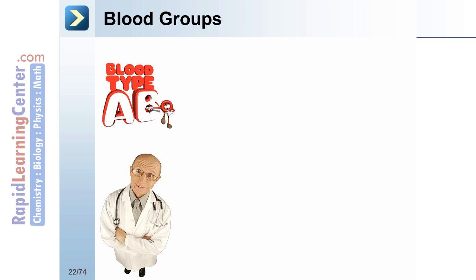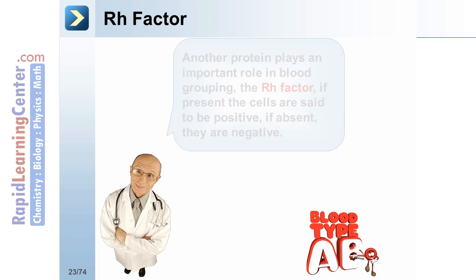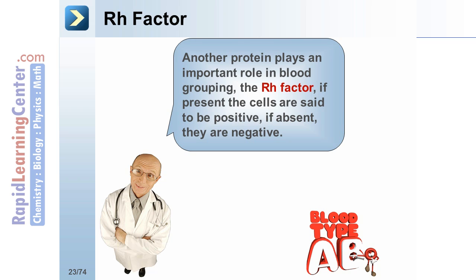Finally, let's take a look at blood groups. The four major blood groups are A, which has the A antigen on the surface of red blood cells and the B antibody in plasma; B, which has the B antigen on the surface of red blood cells and the A antibody in plasma; AB, which has both A and B antigens on the surface of red blood cells and no antibodies in the plasma; and O, which has neither A nor B antigens on the surface of red blood cells, but both A and B antibodies in the plasma. People with the AB blood group are known as universal recipients, and people with the O blood group are known as universal donors. Another protein that plays an important role in blood grouping is the RH factor. If present, the cells are said to be positive, and if absent, they are negative.